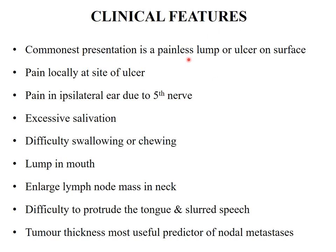Clinical features: the commonest presentation is a painless lump or non-healing ulcer on the tongue. Pain can occur locally at the site of the ulcer or may be referred to the ear. There will be excessive salivation, and the patient may have difficulty swallowing or chewing depending on the size of the lesion. There may be a lump in the mouth and lymph node enlargement. Difficulty protruding the tongue leading to slurred speech may occur. Tumor thickness is the most important predictor of nodal metastasis — greater depth indicates greater risk of lymph node metastasis.